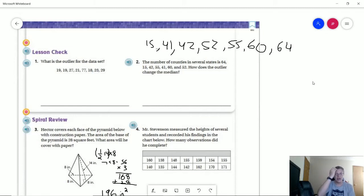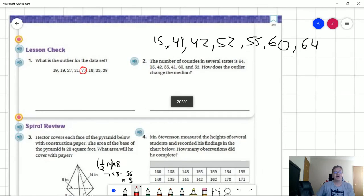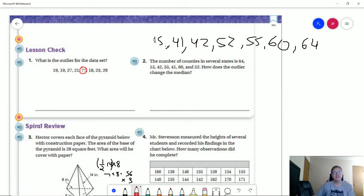Number one, our outlier for this particular set of data is going to be 77. So I'm just going to go ahead and circle that real quick. And then on the lesson video I went ahead and put everything in order. So our outlier is going to be 15. How does that change the median?